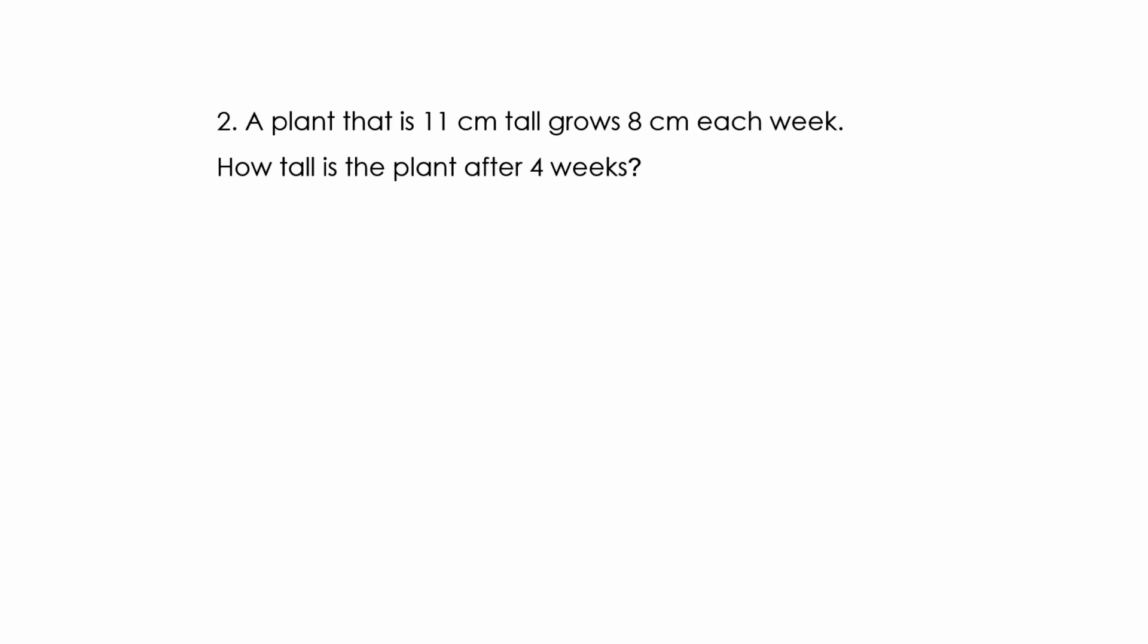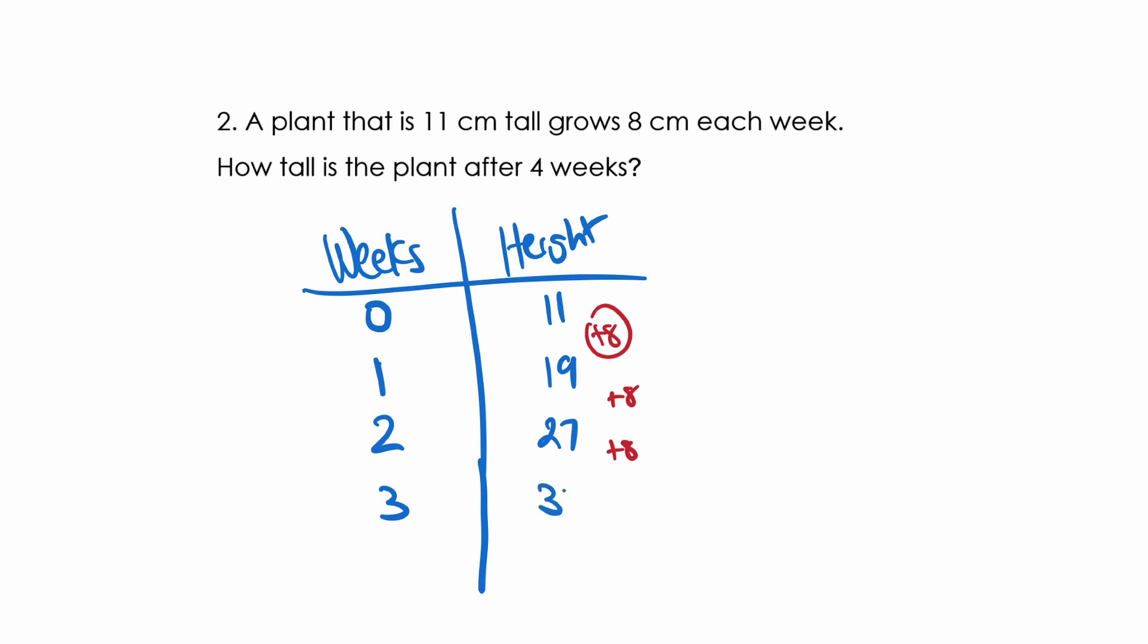A plant that is 11 centimeters tall grows 8 centimeters each week. How tall is the plant after 4 weeks? Well, this is where the T-chart comes into play. So we can say weeks and we can say height. So a plant is 11 centimeters tall and it grows 8 centimeters each week. So we're going to assume that this is week 0 and it is 11 centimeters tall. After 1 week it grows 8 centimeters. So you add 8 and that would make it 19. After 2 weeks again, you're adding 8 plus 8 brings us to 27. After 3 weeks you're adding 8, 27 plus 8 is 35, and 1 more week and 1 more week to go add 8. 4 weeks would be 43 centimeters so it would be 43 centimeters tall.